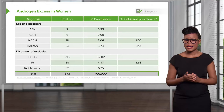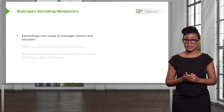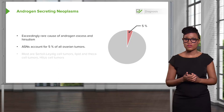Let's now review androgen secreting neoplasms. This is an uncommon cause for androgen excess in women but needs to be remembered in the evaluation. Androgen secreting neoplasms account for 5% of all ovarian tumors. Most are Sertoli-Leydig cell tumors. Lipid, theca, and hilus cell tumors are also known to cause hyperandrogenism.